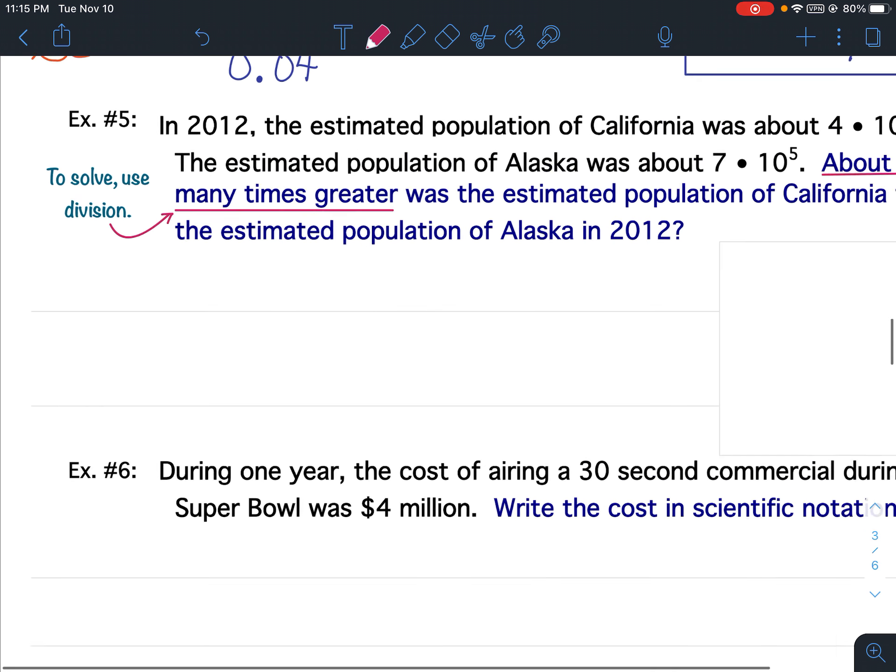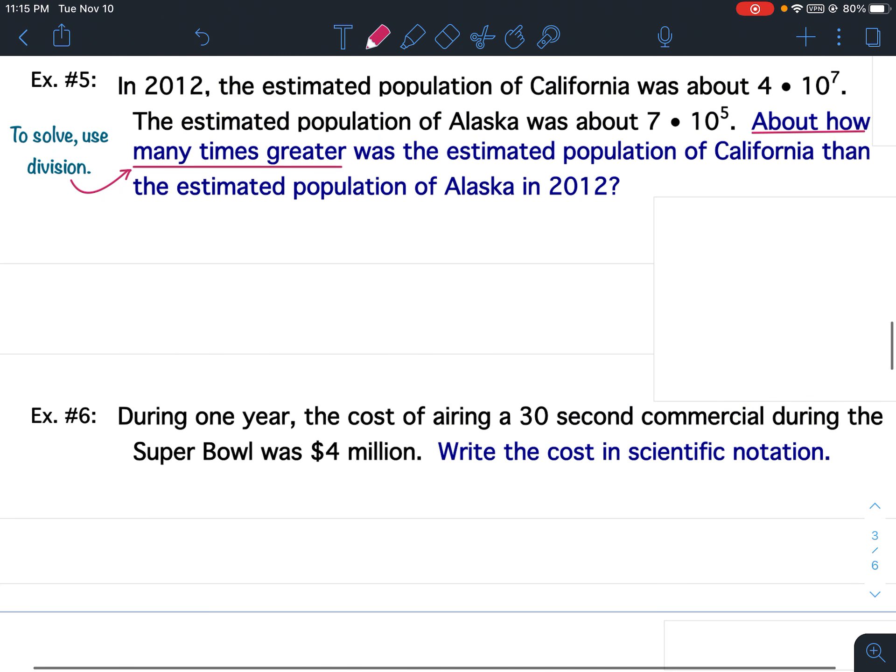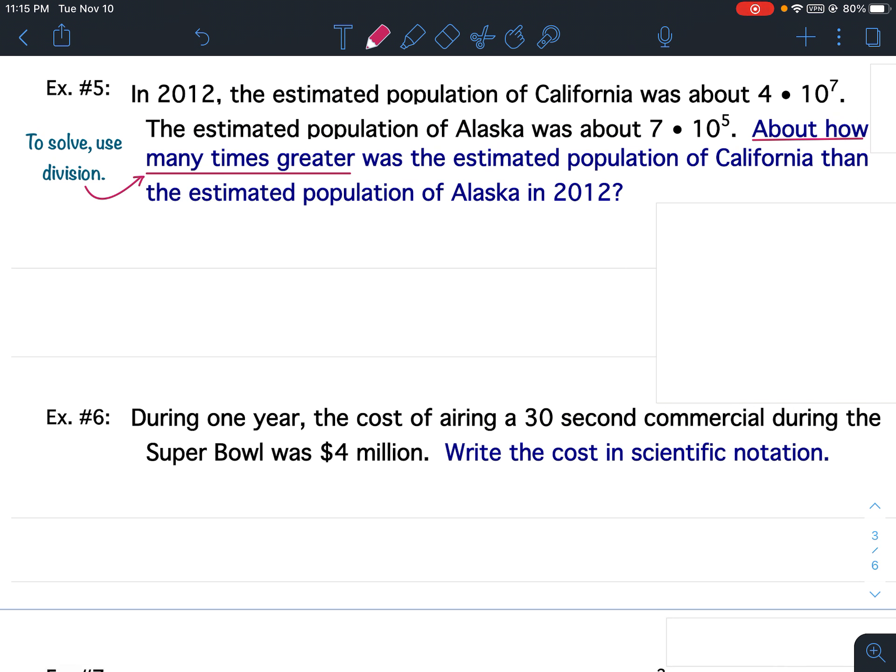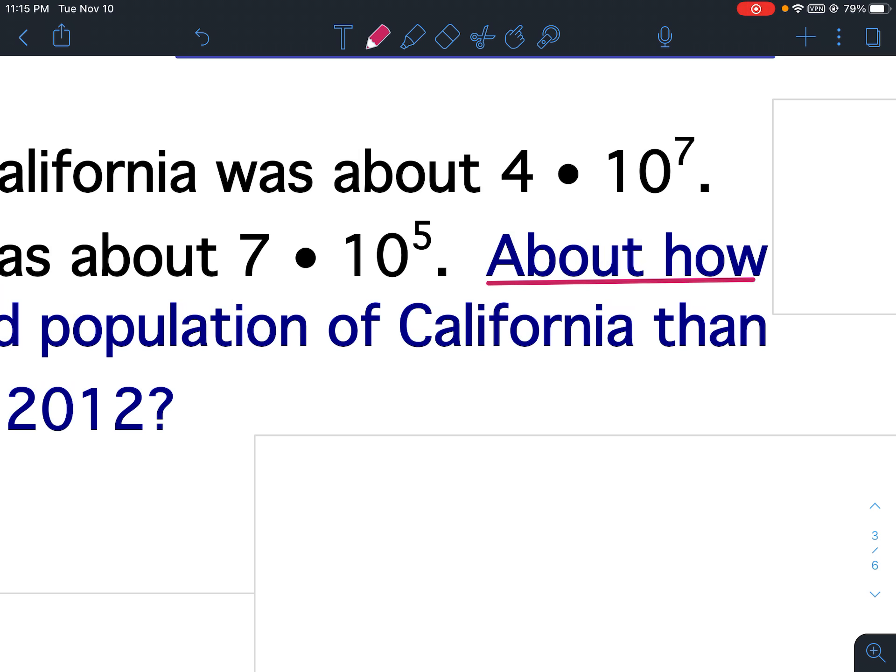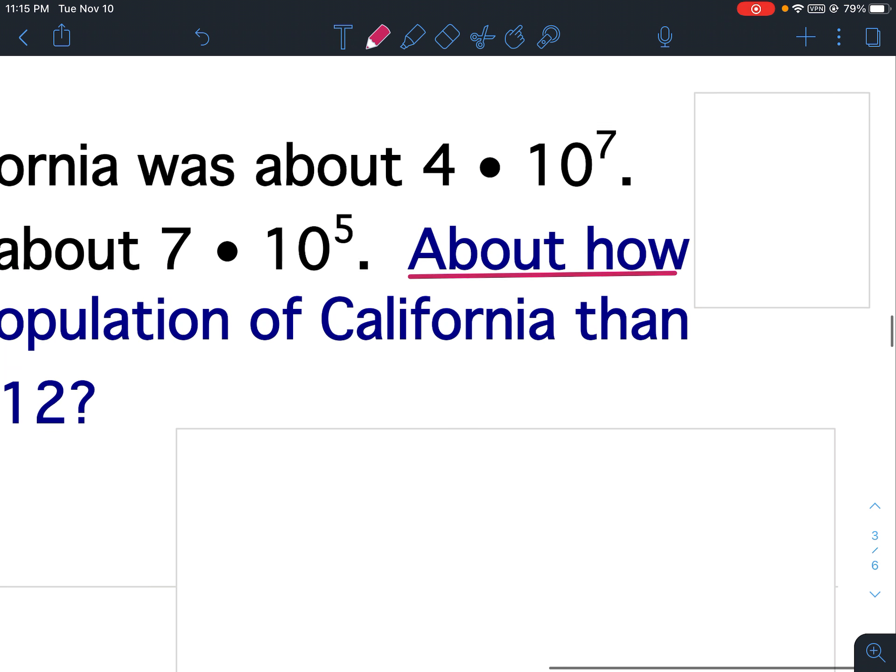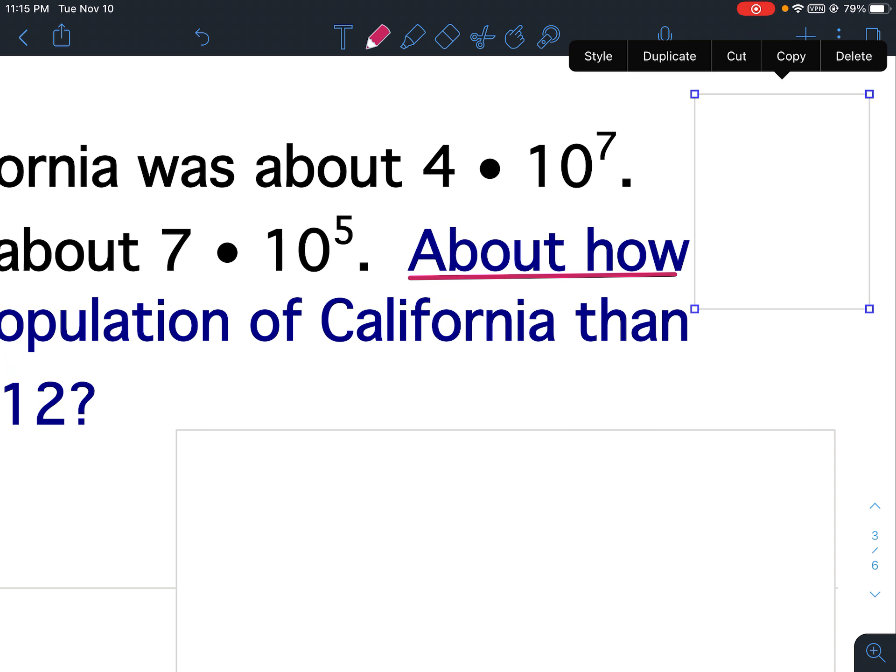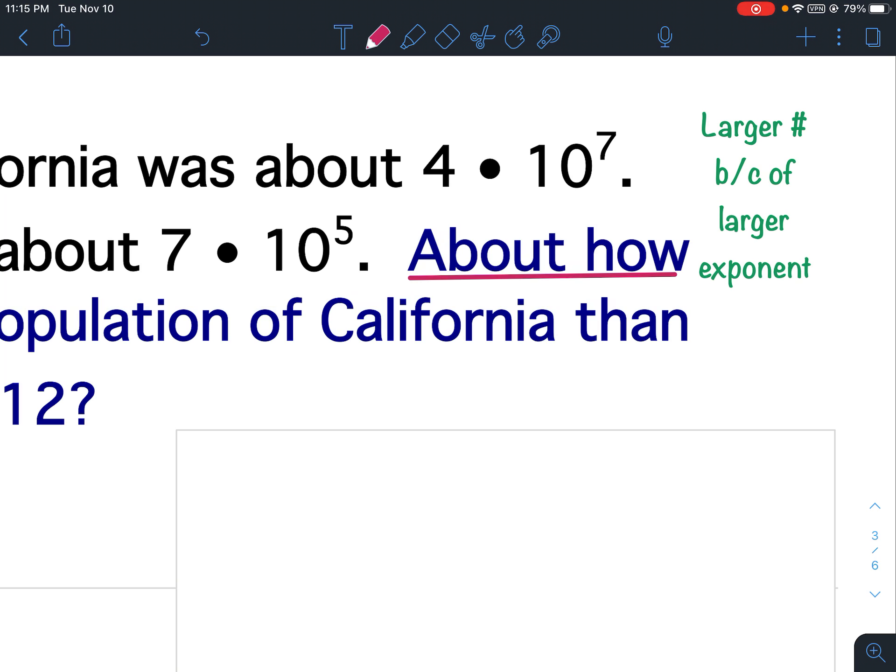Okay. Well, if I'm going to use division, I'm going to take the larger number and divide it by the smaller number. I can't have a negative population. So I'm going to have to take the larger number divided by the smaller number. Well, when you look at these, which one is the larger number? Is it 4 times 10 to the 7th? Or is it 7 times 10 to the 5th? Well, it is 4 times 10 to the 7th.